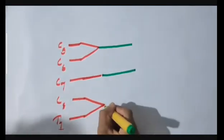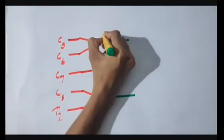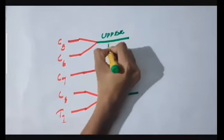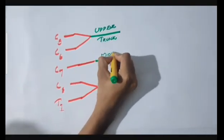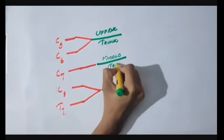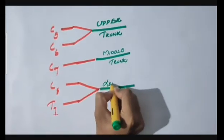And finally, C8 and T1 commands to form the lower trunk. Here is your upper trunk. This is the middle trunk. And finally, this is the lower trunk.